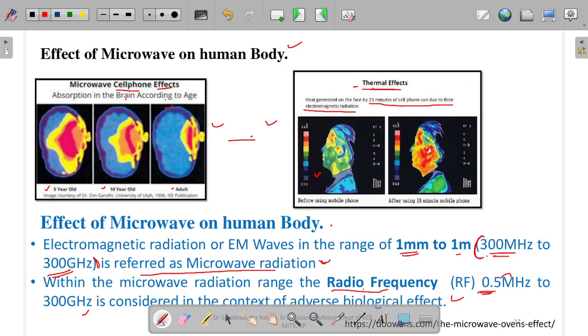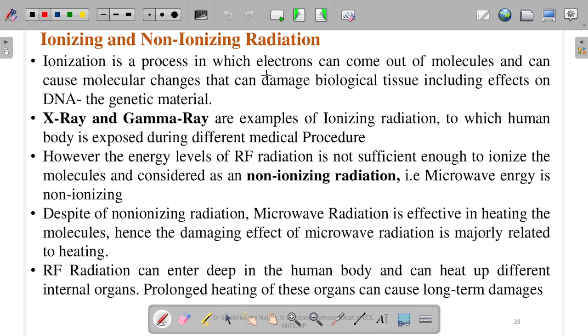Within the microwave radiation range, radio frequency (RF) 0.5 gigahertz to 300 gigahertz is considered in the context of adverse biological effects. This frequency range can cause biological effects in the human body.